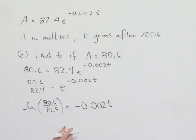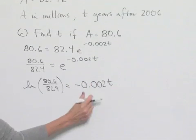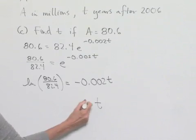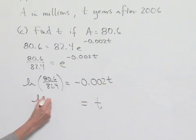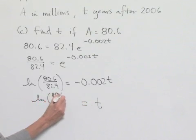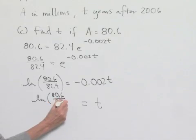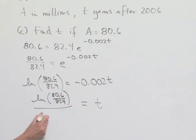To solve for t now requires us to divide both sides of the equation by its coefficient. So, t then equals our natural log of 80.6 divided by 82.4, that amount divided by negative 0.002.